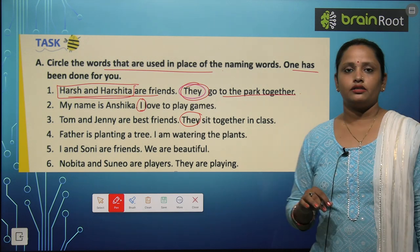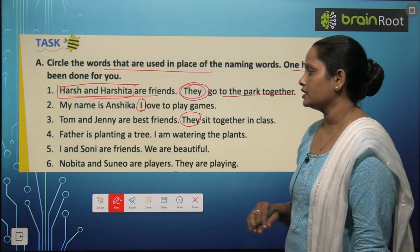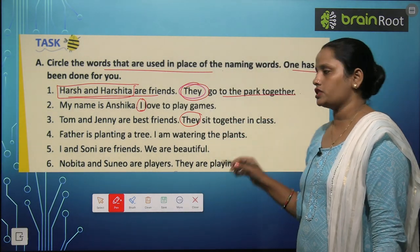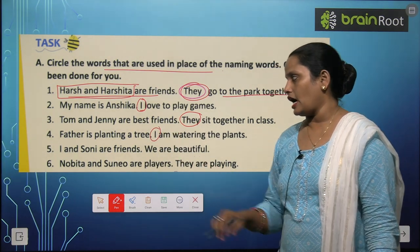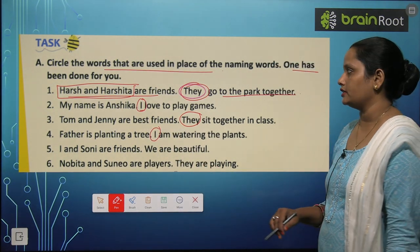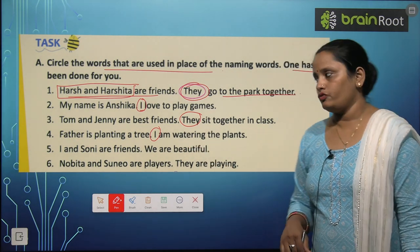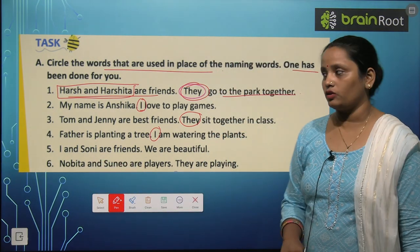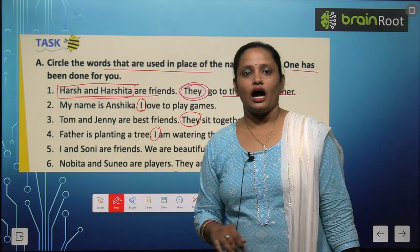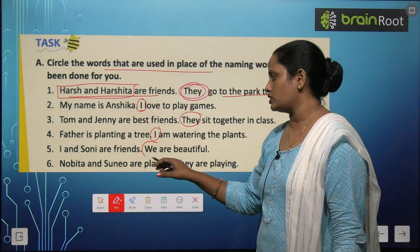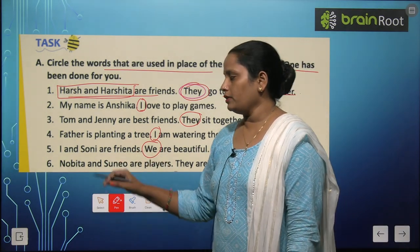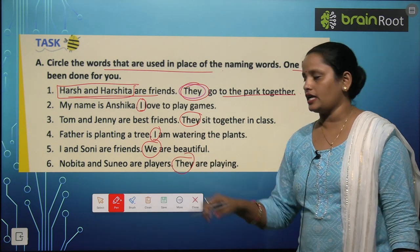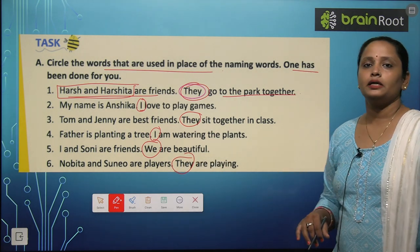They sit together in class. Father is planting a tree. I am watering the plants — so here we circle I. I and Sony are friends. We are beautiful — Sony aur meri baat ho rahi hai, so we use We. Nobita and Sunio are players — They are playing, so we use They.